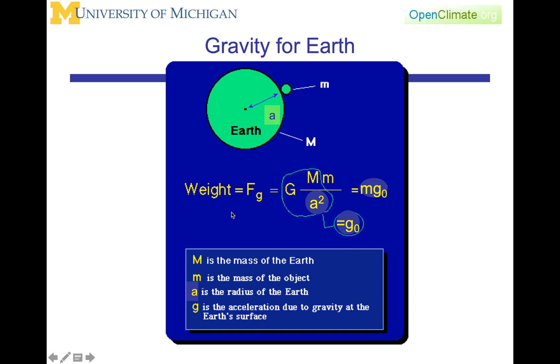This force, which is the same as the weight force, is the force of gravity, and it's the big G, the constant of proportionality. It has the mass of the earth. We are going to use a here as the radius of the earth, little m. And by convention, again, we are going to take this G M over a squared and call it g naught. Big M is the mass of the earth, little m is the mass of the object, a is the radius of the earth, and g is the acceleration due to gravity at the earth's surface.